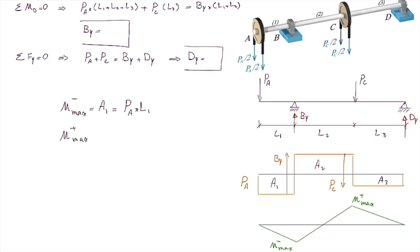To determine the maximum positive moment, I need to add up A1 and A2. Alternatively, starting from the right side, the change in the moment diagram equals the area under the shear, which is negative A3. Area A3 is D_Y multiplied by L3. This is the approach for determining the maximum positive and negative moments.